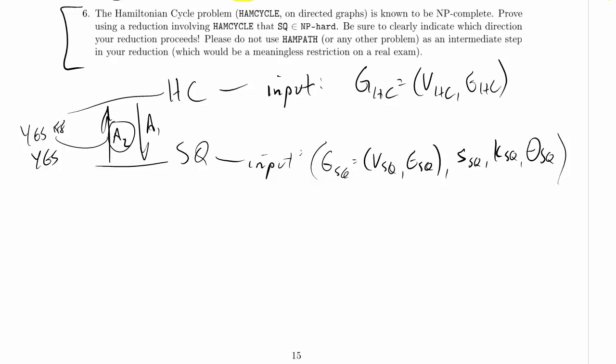So I'm going to try and set that up. I'm going to go from here and say V_SQ is equal to V_HC union V prime for an arbitrary vertex V in V_HC.